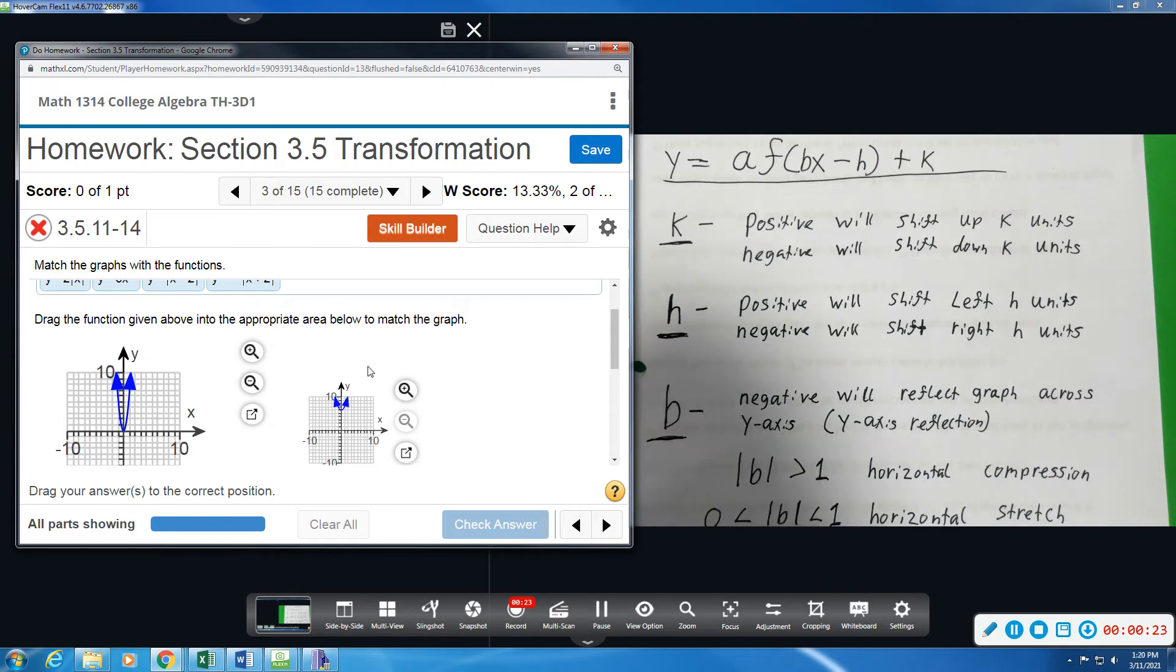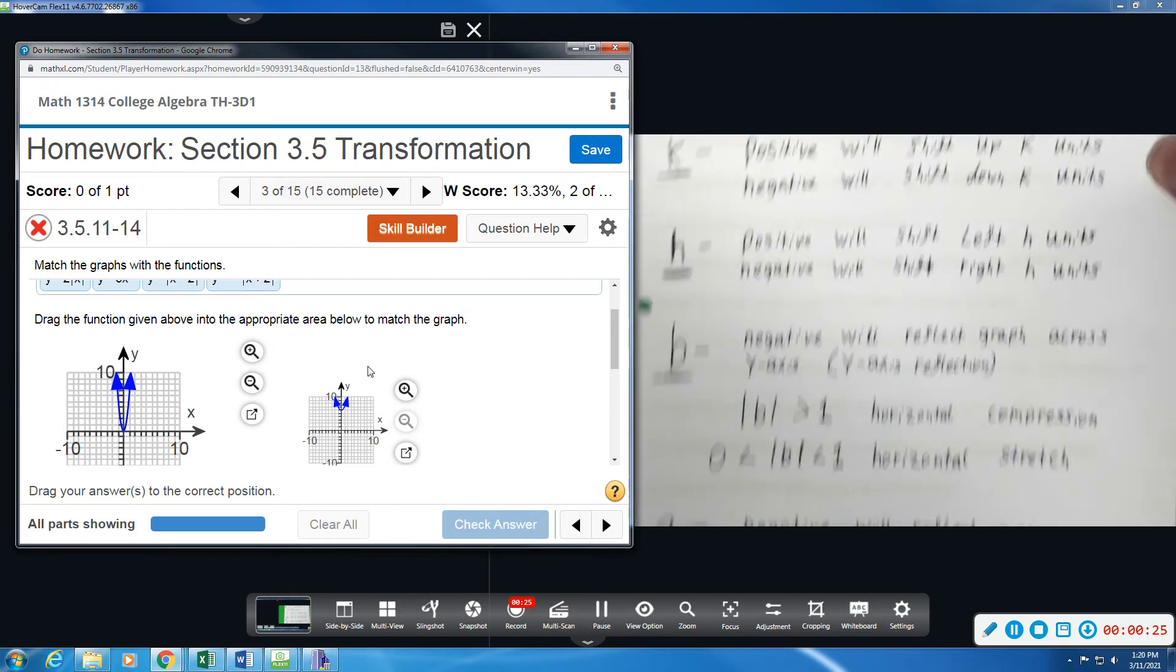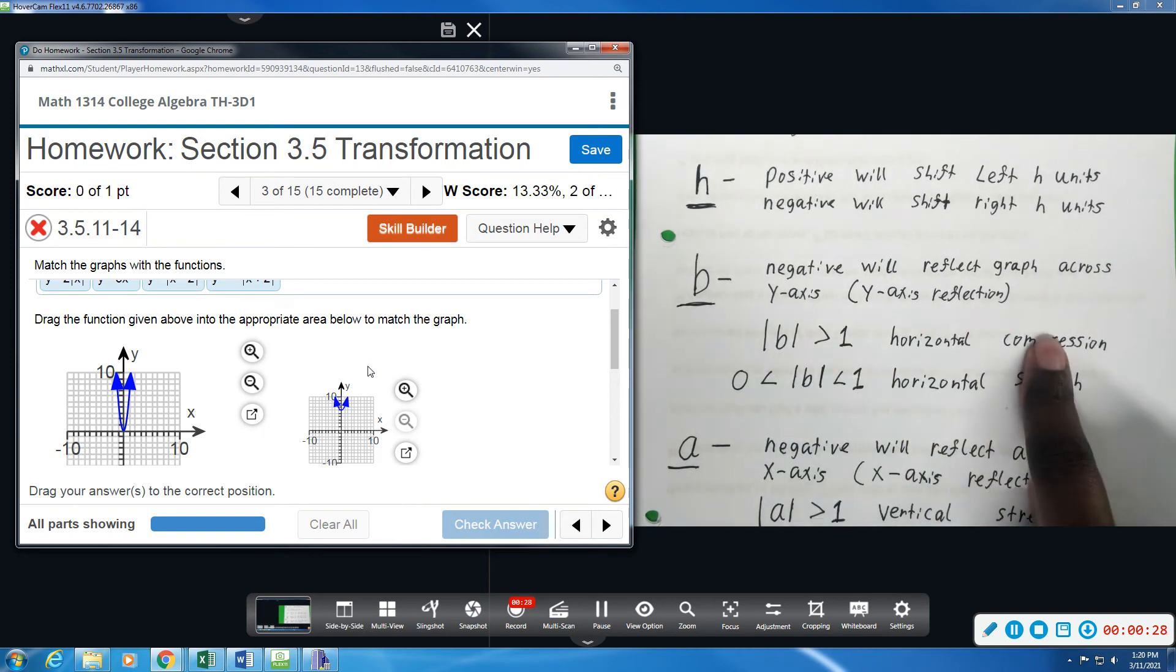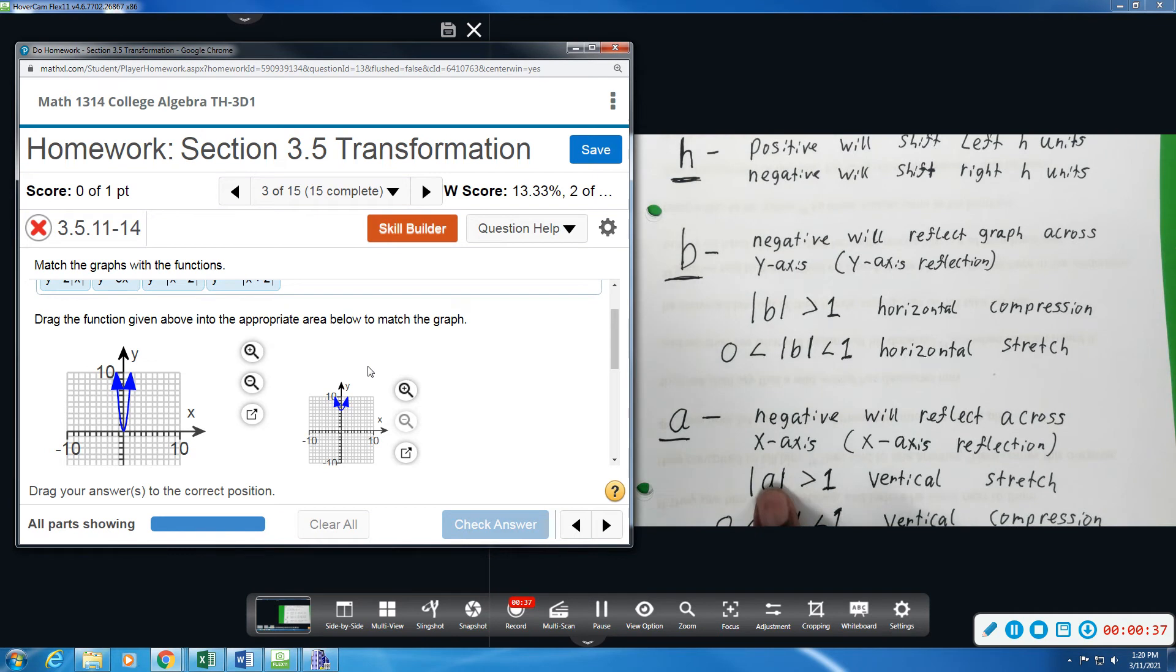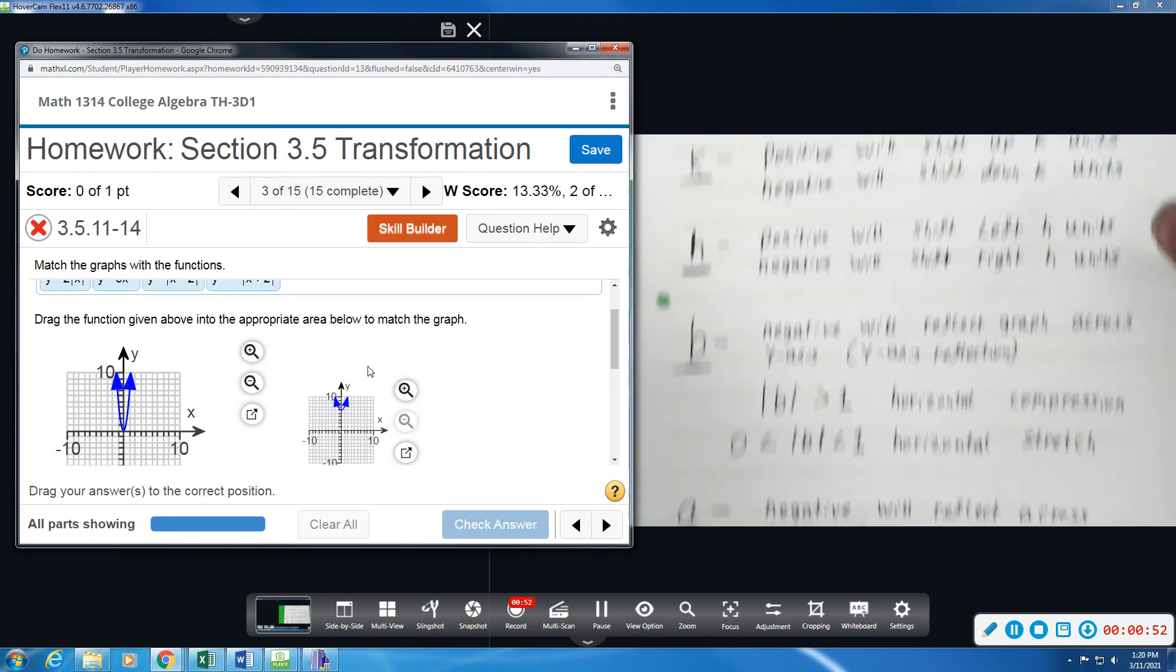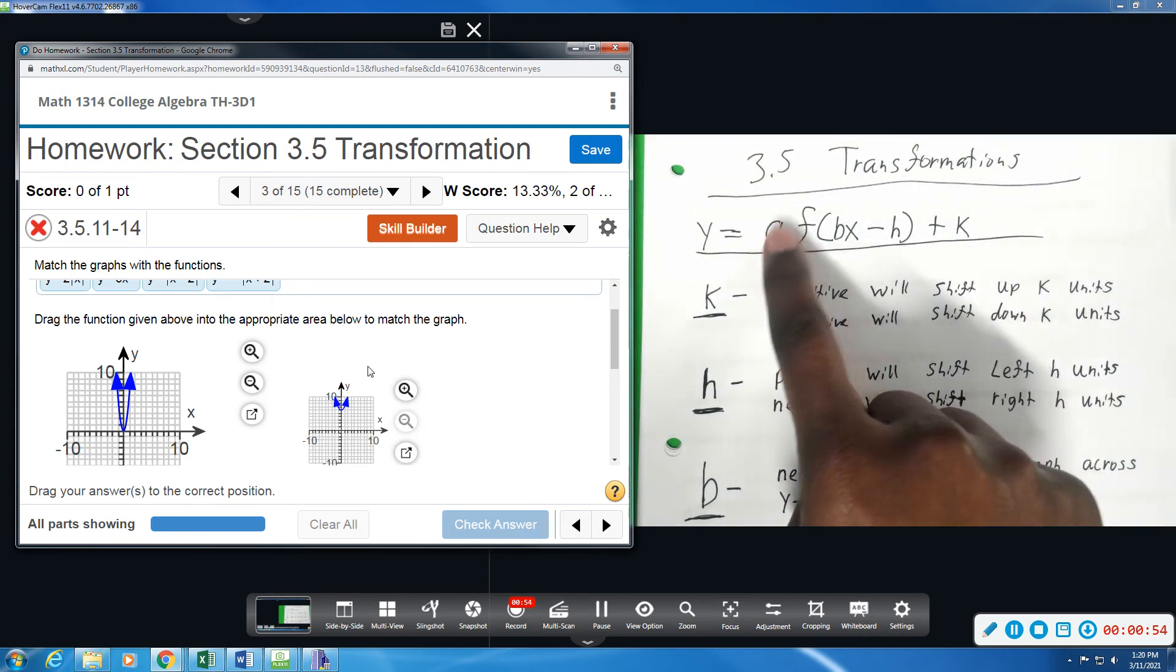By default, there are two that would give it that appearance. It could be a horizontal compression or a vertical stretch down here when a is greater than one. Usually, unless they tell us it's a compression in the horizontal direction, we always default to a vertical stretch or compression. So we're going to be looking for a vertical stretch, an a value greater than one that's going to stretch this out.